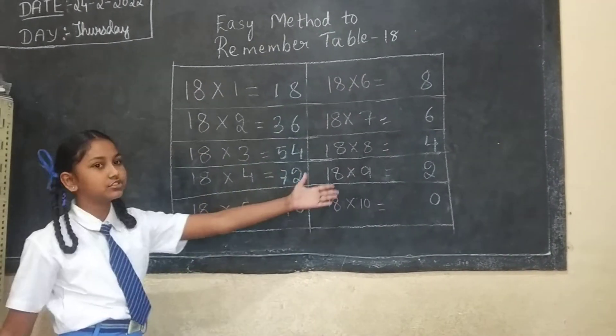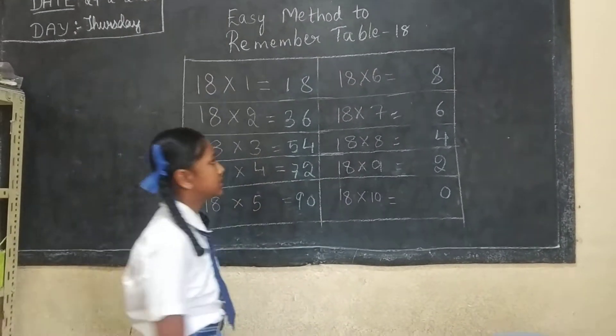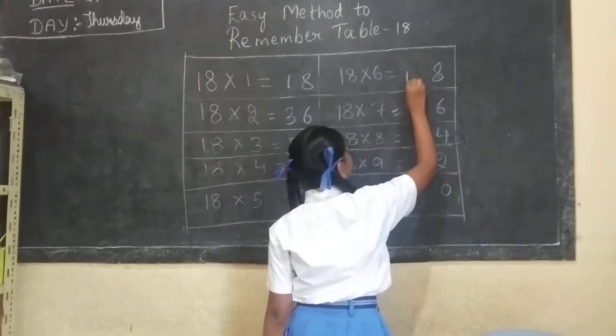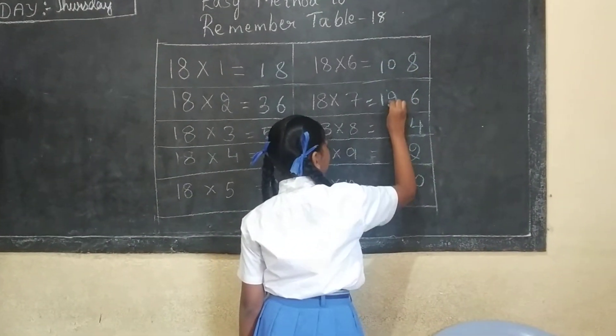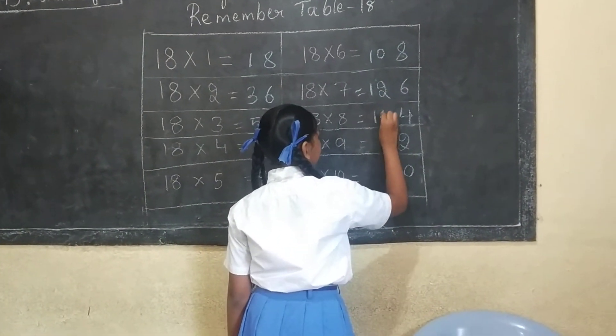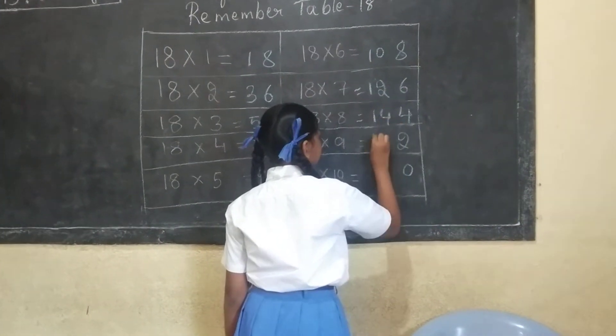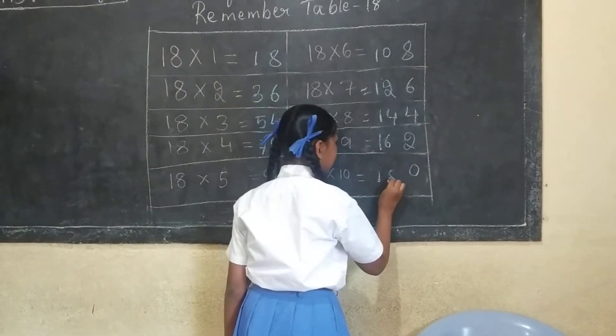And here we should write even numbers: 10, 12, 14, 16, 18.